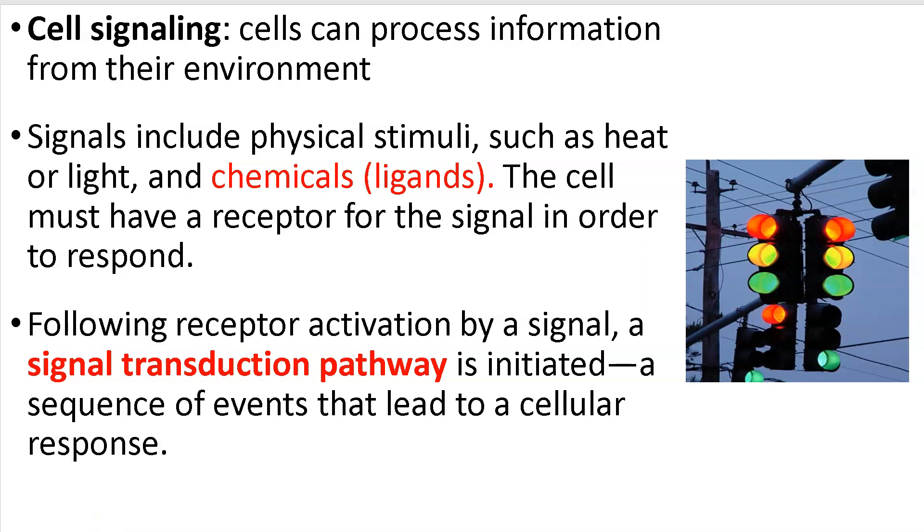Cell-to-cell communication allows the cells of the body to coordinate their activities. Communication between cells is also essential for many unicellular organisms. So it doesn't matter if you're made of one cell or many cells, this is essential to life. So what exactly is cell signaling? Cell signaling is the process where cells can process information from the environment. We're trying to figure out what the environment, how has it changed and how do we need to respond? So a stimulus evokes a response, a change. And so signals include physical stimuli like heat or light and chemicals. These are called ligands. Following receptor activation by a signal, this is very important right here, a signal transduction pathway is initiated. A sequence of events that lead to a cellular response.